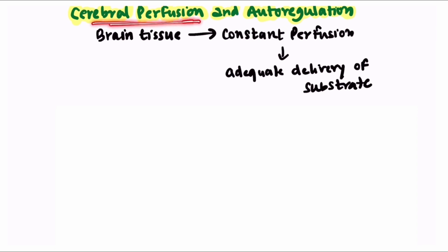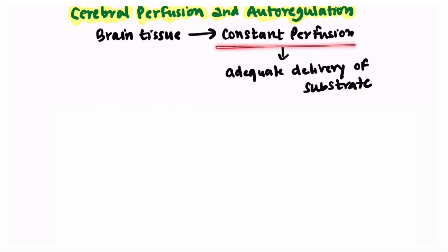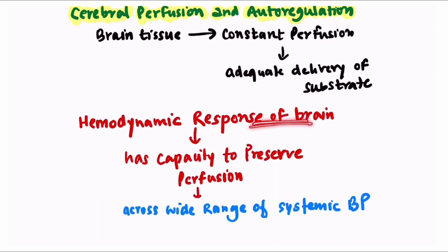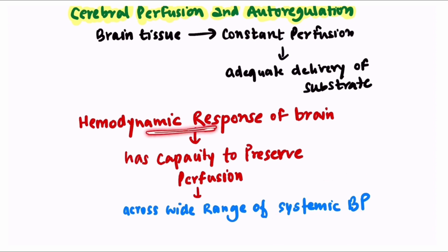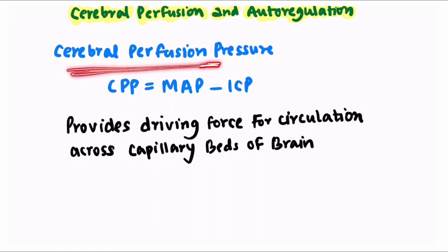In cytotoxic edema, there is swelling of the endothelial cells, astrocytes, and neurons, and this leads to membrane breakdown and cell destruction. Now, brain tissue requires constant perfusion to maintain adequate delivery of substrates. To maintain this constant perfusion, the brain has a unique property — the hemodynamic response — by which it has the capacity to preserve perfusion pressure across a wide range of systemic blood pressures, whether hypotension or hypertension.